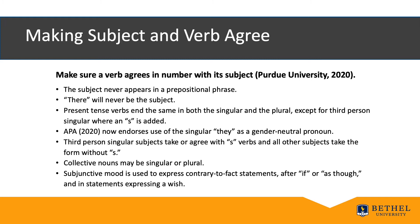You're likely to make mistakes when you're not sure what the subject is, or when you don't know whether the subject is third person singular or plural. The subject never appears in a prepositional phrase. 'There' will never be the subject. In the present tense, all verbs end the same in both the singular and plural, except for third person singular where an S is added. Plural words that can be replaced by the pronoun 'they' agree with the verb without the S. APA 7th edition endorses the use of the singular 'they' for a person whose gender is unknown or irrelevant.